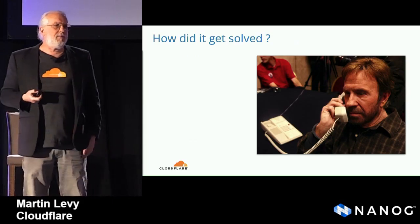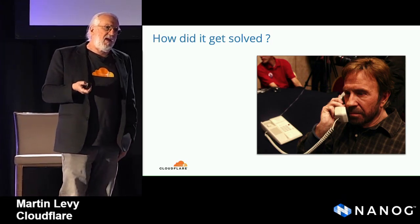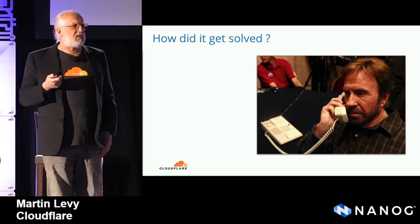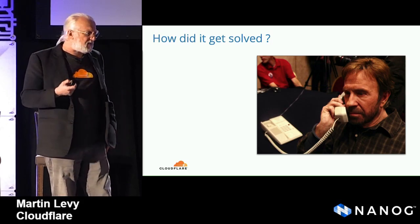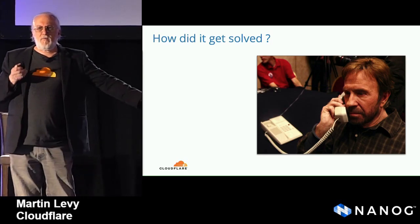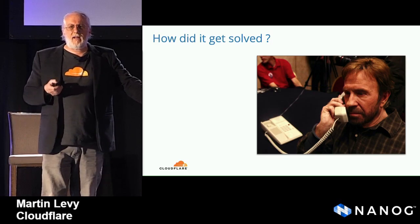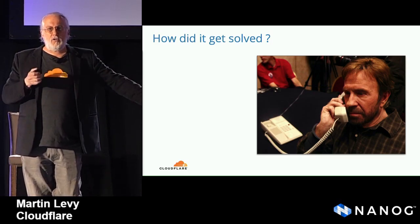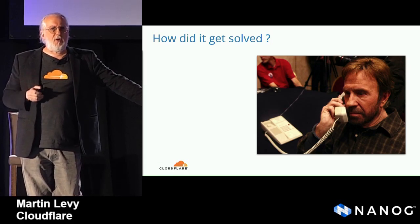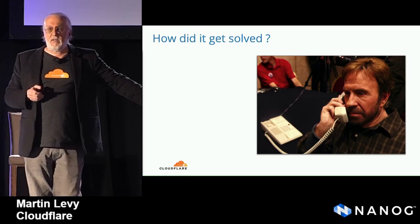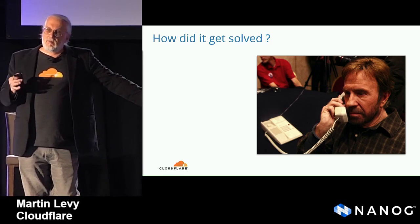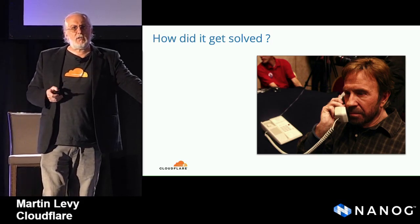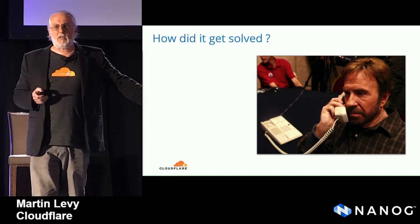How did we get it solved? The answer — without any words on this slide — is we made phone calls. Plural. We quickly realized there was a route leak, and a very specific AS number was the cause, the source of those route leaks. We picked up the phone, found the WHOIS information, which returned a valid piece of information, and called them. It was early working hours of the morning for them on the East Coast. And they simply said, 'Nope, not us. Thank you very much.' Click.